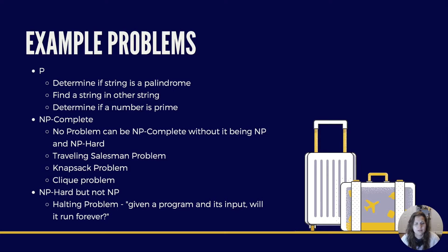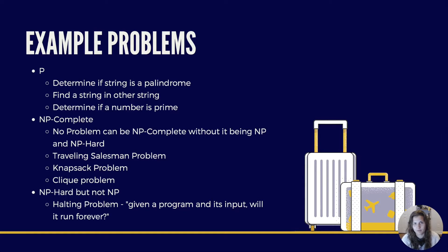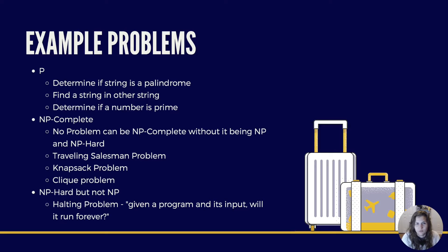So I've talked about P, NP, NP complete, and NP hard problems, but that's kind of hard to grasp. Let's talk about it with example problems. A P problem — one that can be solved in polynomial time — would be something like determining if a string is a palindrome, finding if a string is contained in another string, which can be done in linear time, or determining if a number is prime.